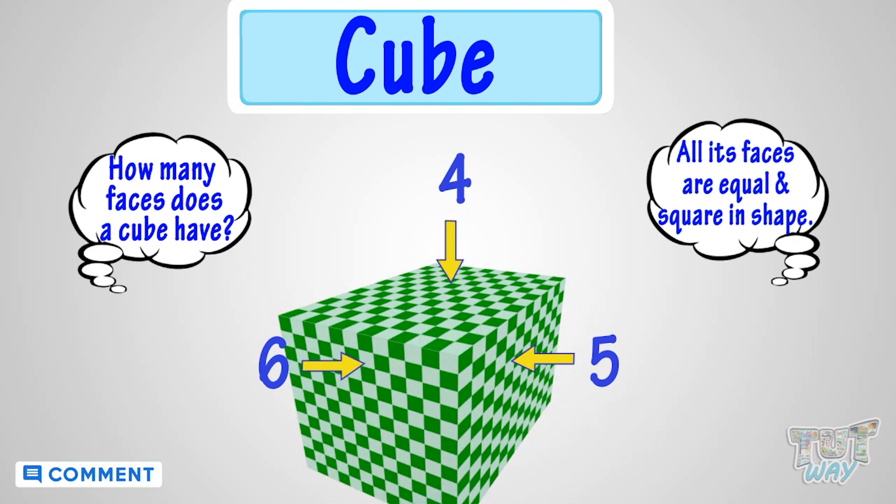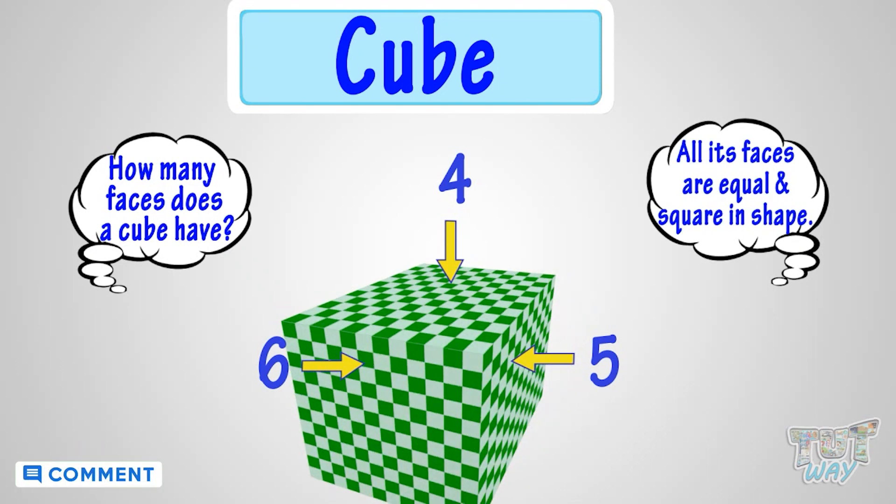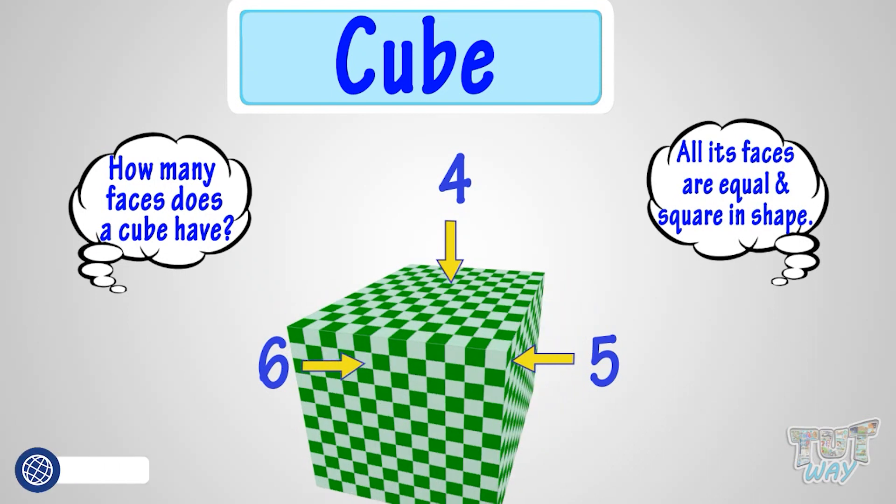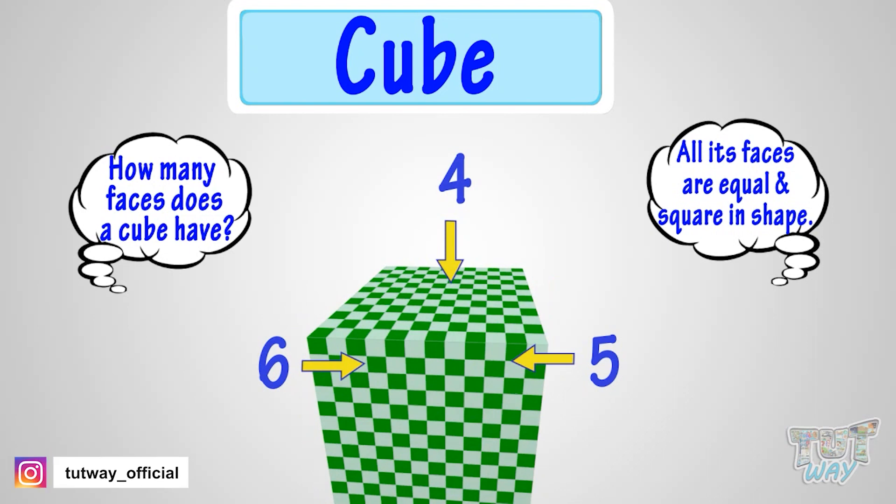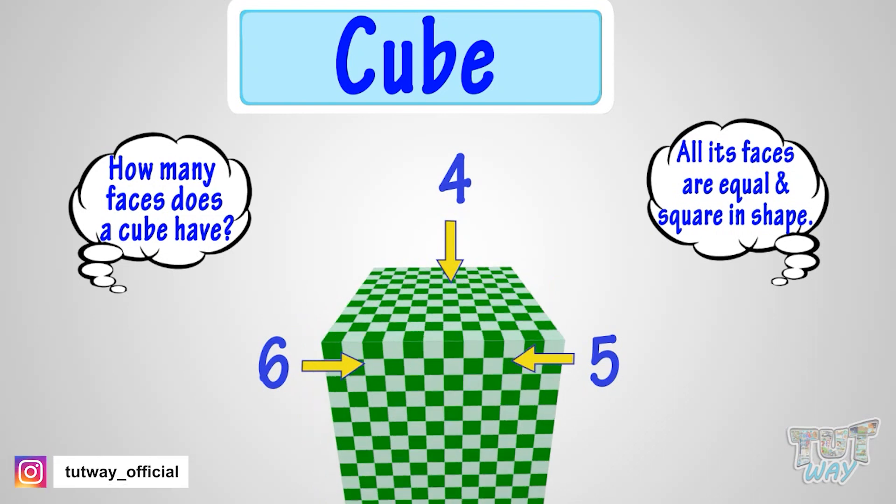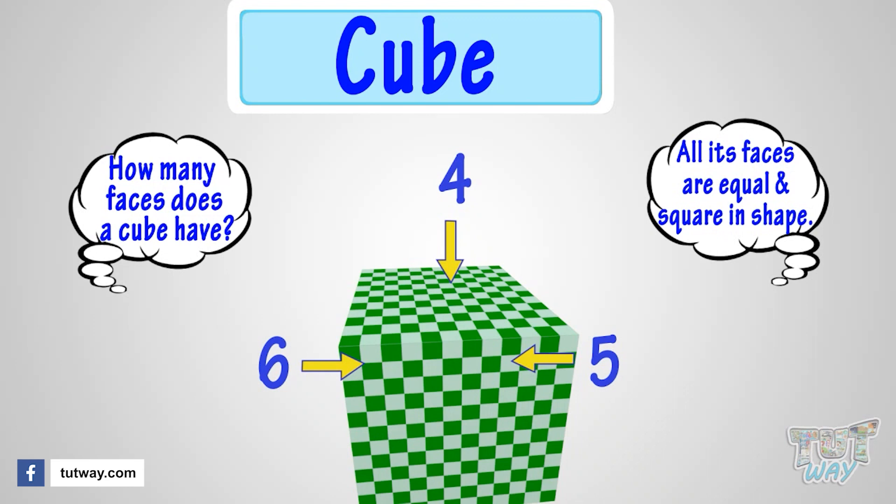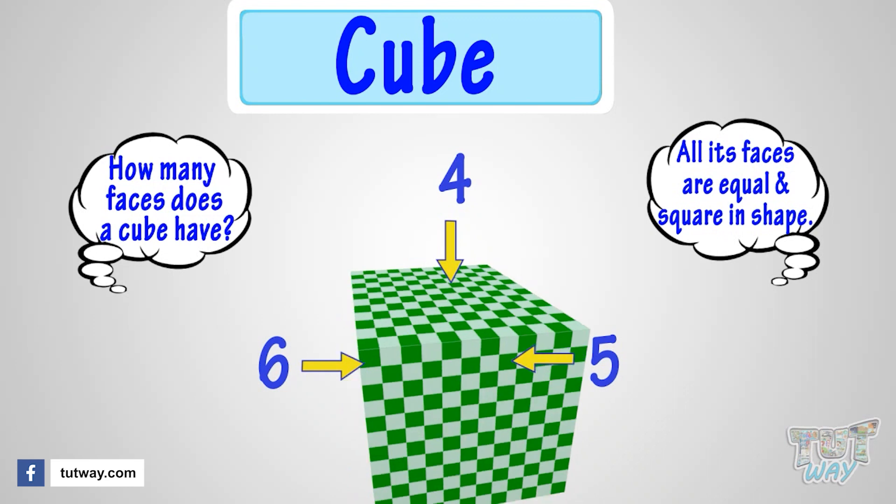So now we know that a cube has 6 faces, which are all equal and square in shape. Can you find more objects like a cube in your house? Try to imagine.